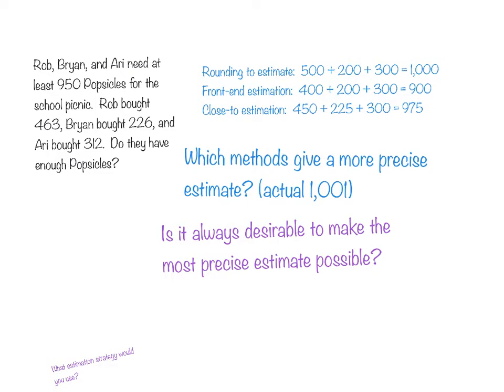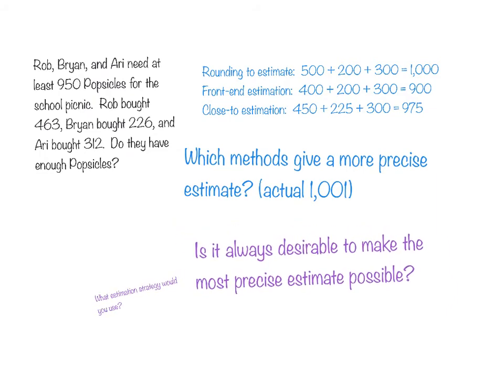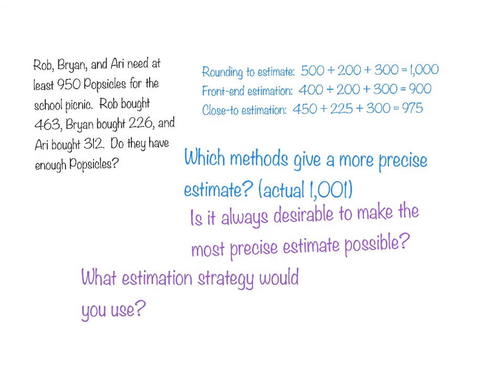Is it always desirable to make the most precise estimate possible? What do you think? No, it is not. It depends on the context. If you need a general idea of a number size, a slightly less precise method is fine. But if you need to know if you have enough of something, you need a more precise estimate. In this case, the choice of estimation method is crucial to finding a reasonable answer. Our close to estimation method is not close enough, so we would not want to use that one. If we were wanting something more precise, which estimation strategy would you use? Hopefully you picked the rounding to estimate.